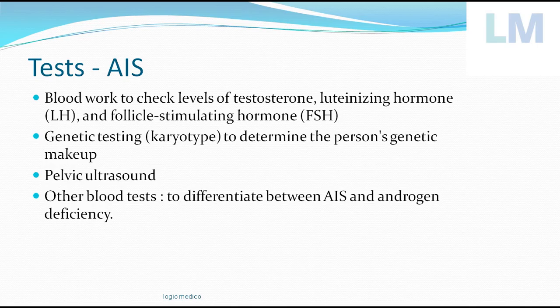Blood tests also help distinguish AIS from androgen deficiency. In some conditions the testes are present normally but androgens are not produced — in those cases androgen levels are drastically low and treatment involves androgen or testosterone injections. In AIS, however, the androgen level is drastically high, but it is not working due to receptor resistance. This key distinction separates AIS from androgen deficiency.